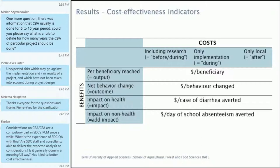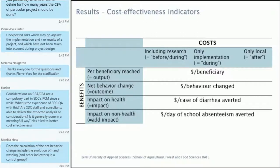There was quite a high amount used for research in this project, so we did one calculation with research costs and one without research costs. If you do a similar project in another place, you would not have to do all the research again — that's why we chose to show both results. We also calculated an indicator for only local costs after the campaign. Indicators include: dollars per beneficiary reached at the level of outputs, dollars per net behavior change as an outcome, dollars per case of diarrhea averted as an impact, and dollars per day of school absenteeism averted as an additional impact.